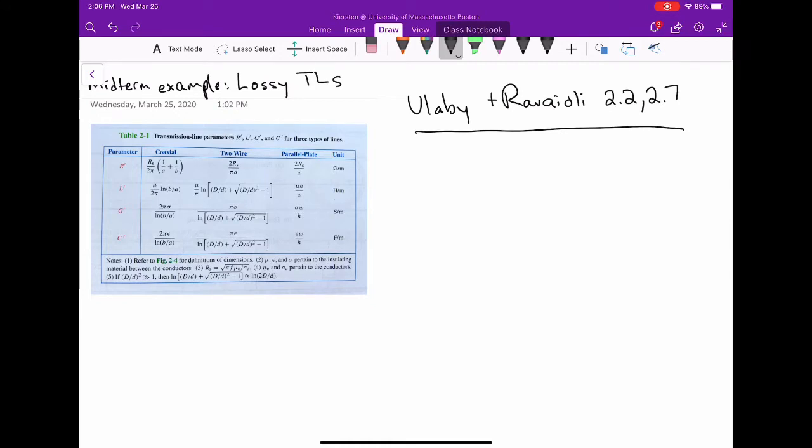Starting with problem 2.2, which says a two-wire copper transmission line is embedded in a dielectric material with relative dielectric constant 2.6 and conductivity 2×10⁻⁶ Siemens per meter.